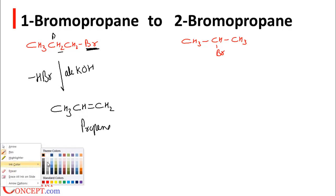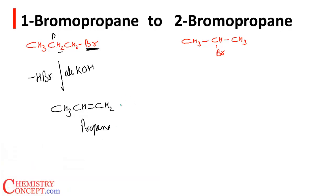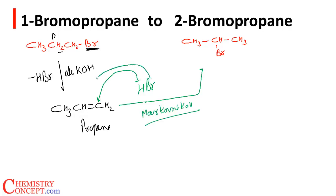Now we add HBr again. This time, H goes to the double-bonded carbon with the greater number of hydrogens (Markovnikov's rule), and Br goes to the double-bonded carbon with the lesser number of hydrogens, resulting in the formation of 2-bromopropane.